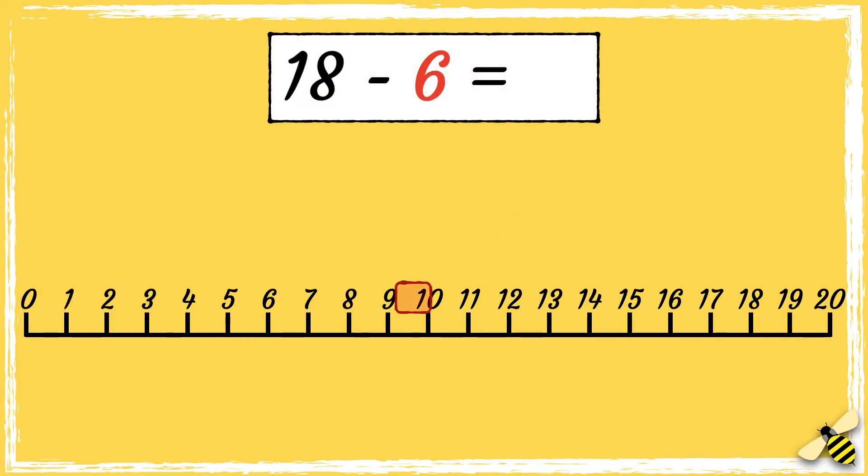We start from 18, and we're taking away 6, so we need to jump six digits backwards: one, two, three, four, five, six. We've landed on 12, so 18 take away 6 equals 12.